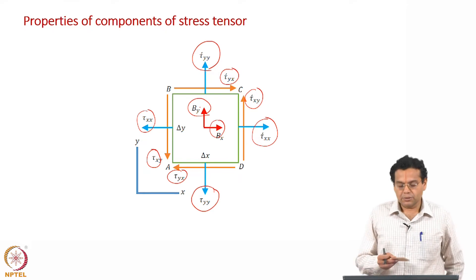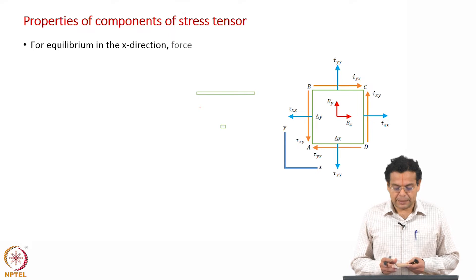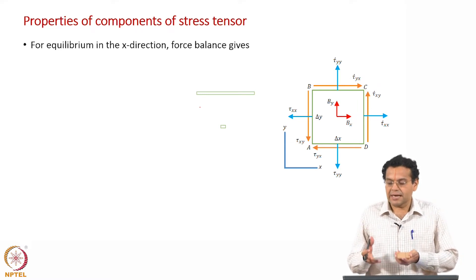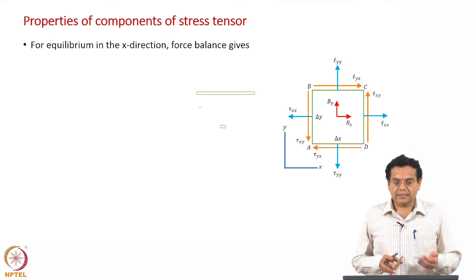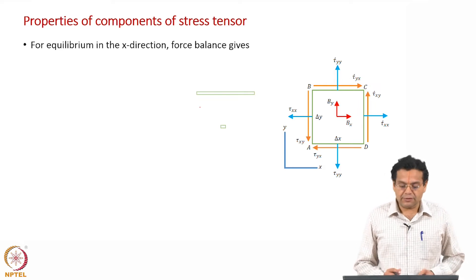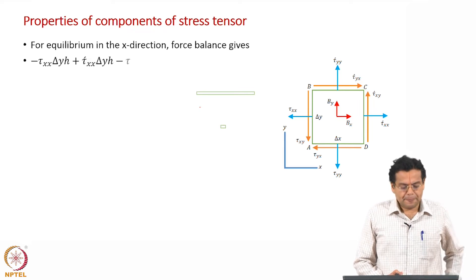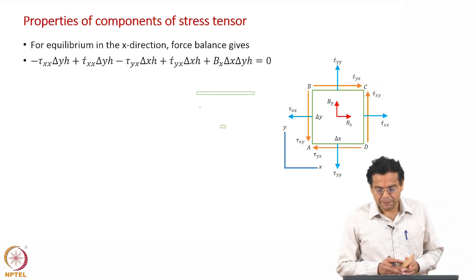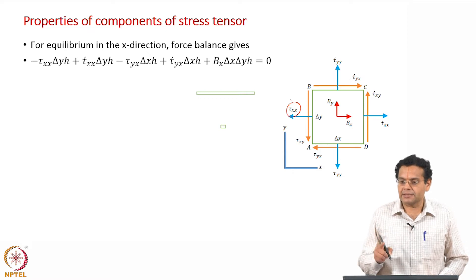We will use this 2D element to arrive at the properties of the components of the stress tensor. Since the whole solid is under equilibrium, this element is also under equilibrium. So we can perform a force balance along the x direction. To write the force balance, we need the direction, the stress, and the area — three quantities are required. Let us take the left face: we consider components of stress acting along the x direction, just as we did for the tetrahedron.